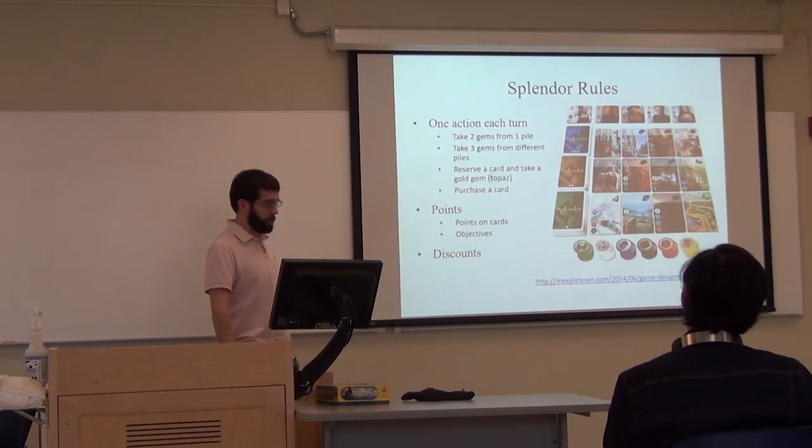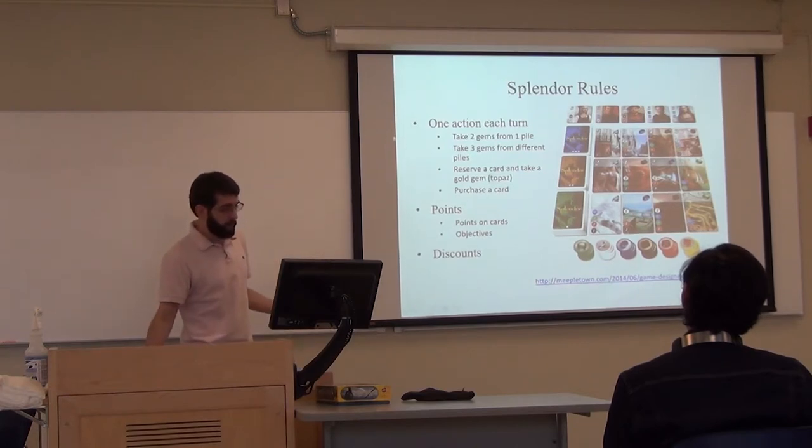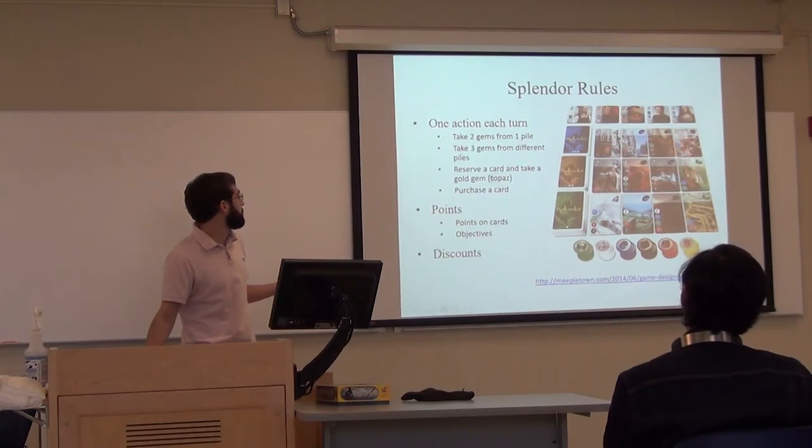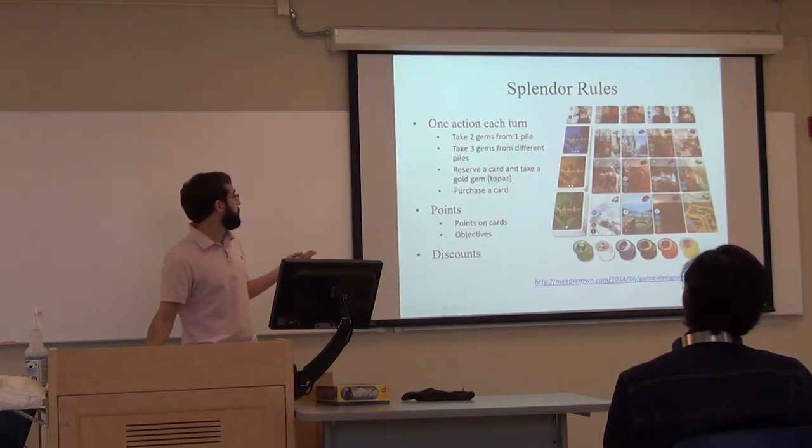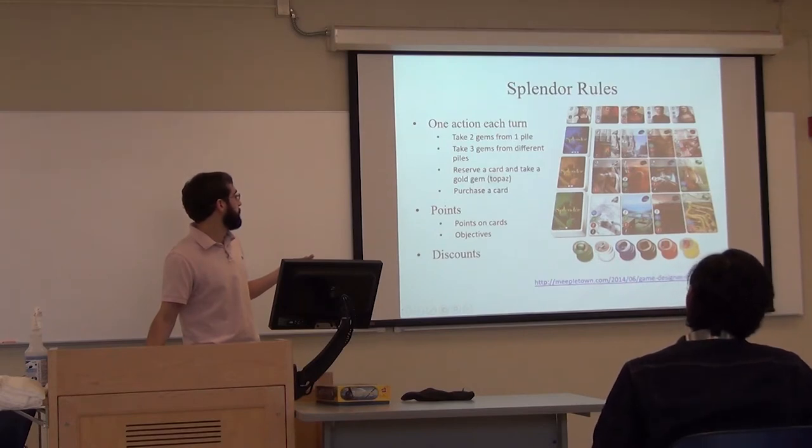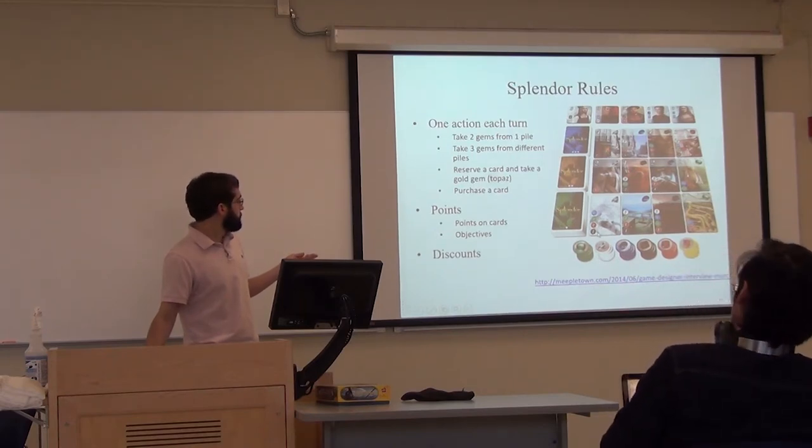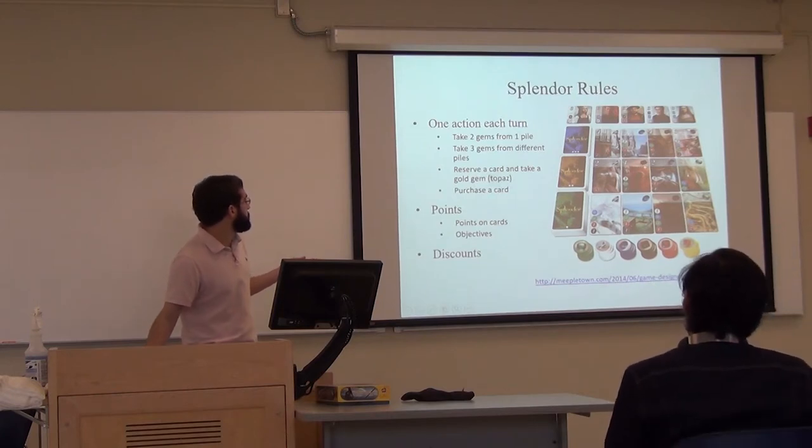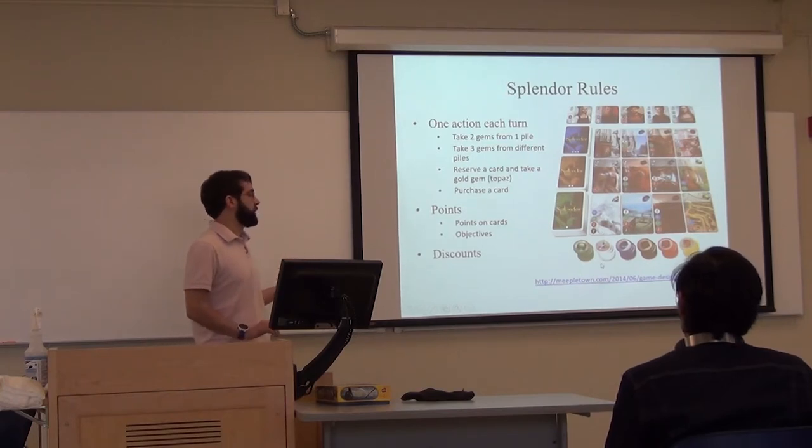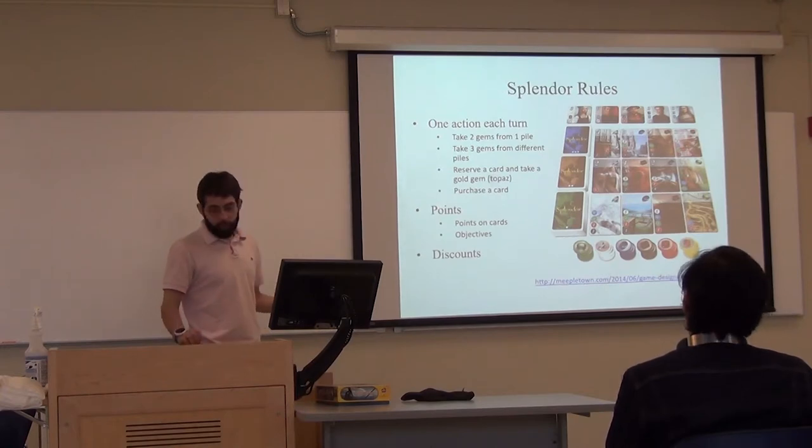You see that each of these cards has - some of them have numbers at the top. These are how many points they're worth. They have a color on the right here, or gem on the right. This basically reduces the cost of all other cards you purchase by one of this color. And then, cost is in these colors here in the numbers. So this costs one blue, one green, one red, one black. If you have, say, this card, for example, which is black, this would cost one less black. The general strategy is you want to get cheaper cards so that it's easier to buy more of the expensive cards later.